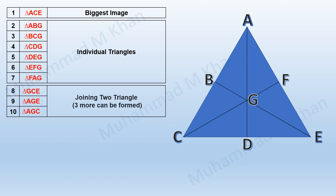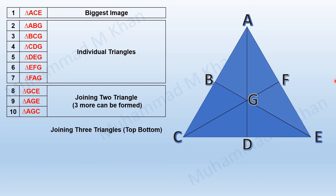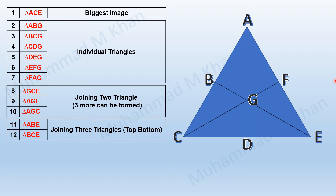Another way to find more triangles is to join three triangles at a time. We start joining the top triangles first: triangle ABG joined with triangle AFG, then adding triangle GEF forms triangle ABE. Similarly joining three figures forms triangle BCE. The total number of triangles has become 12.